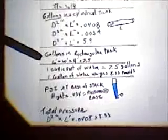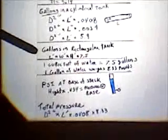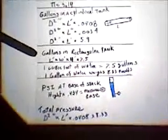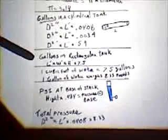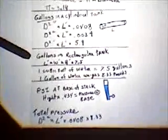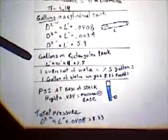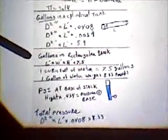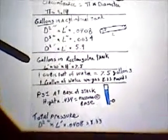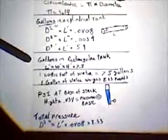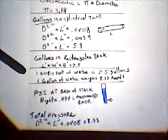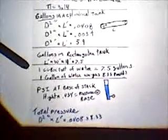Now, the gallons in a rectangular tank is basically the length in feet times the width in feet times the height in feet times 7.5 gallons in one cubic foot of water. So, one cubic foot of water equals 7.5 gallons.